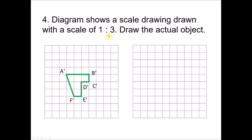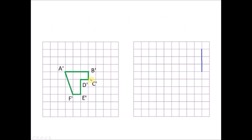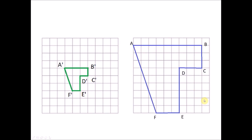Question 4: The diagram shows a scale drawing with a scale of 1 to 3. You are given the scale drawing and need to draw the actual object. Every 1 unit of the scale drawing represents 3 units of the object. For side BC, 1 unit in the drawing becomes 3 units in the object. Applying this to all sides — 1 unit becomes 3, 2 units becomes 6 — gives the final actual object.